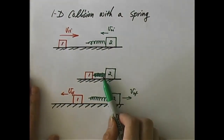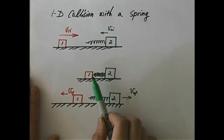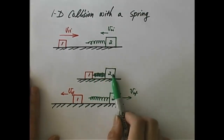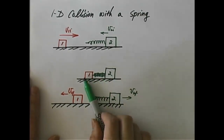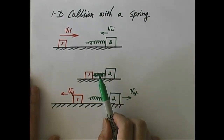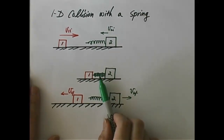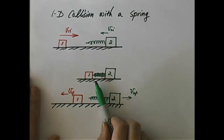The spring gets compressed more and more. When the spring is compressed, part of the kinetic energy carried by these two objects will be converted to potential energy — that's the elastic potential energy of the spring. But since the force of the spring is a conservative force, whatever work you do against that force is not wasted; it gets stored as potential energy.